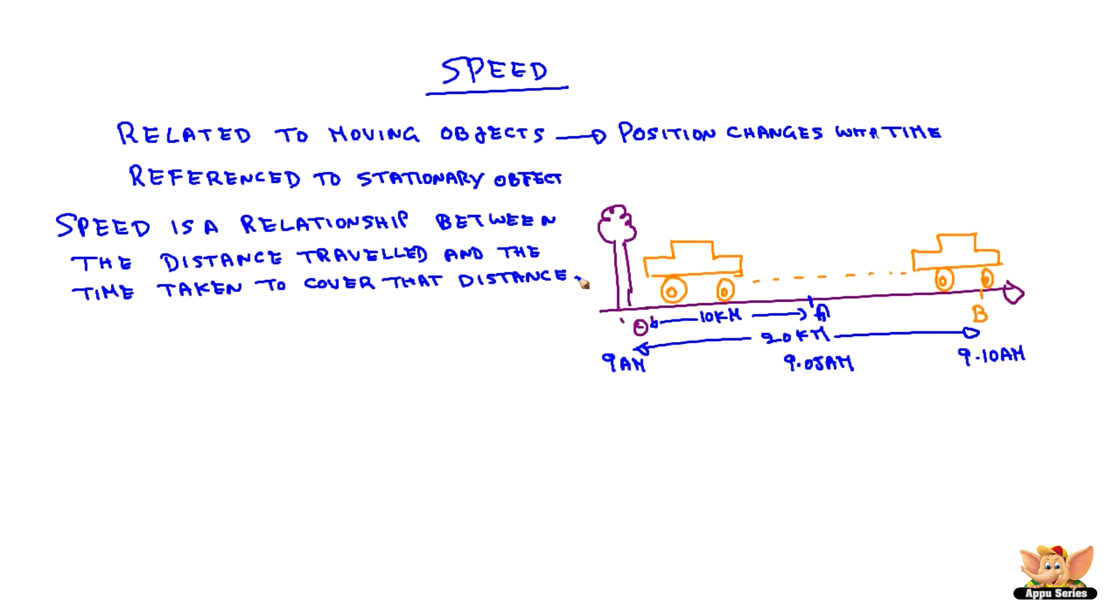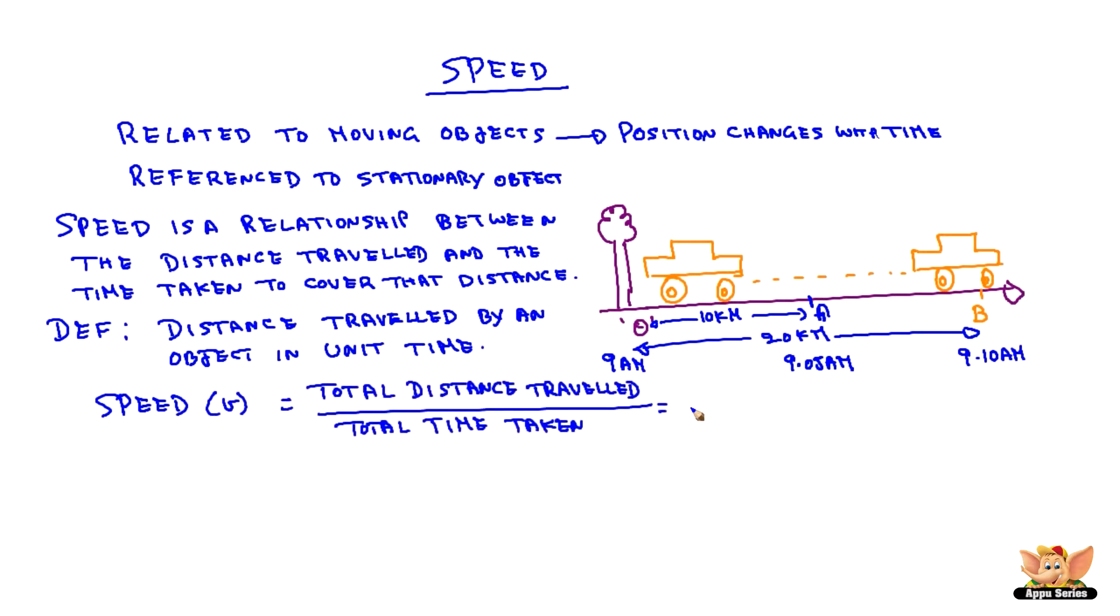Speed is distance travelled by an object in unit time. Speed is generally denoted by the letter V and can be written as total distance travelled divided by total time taken.